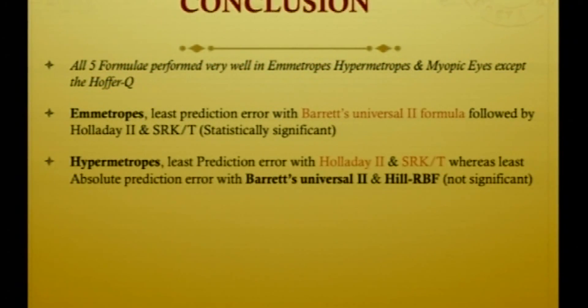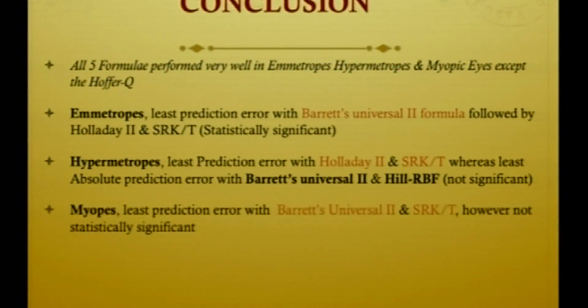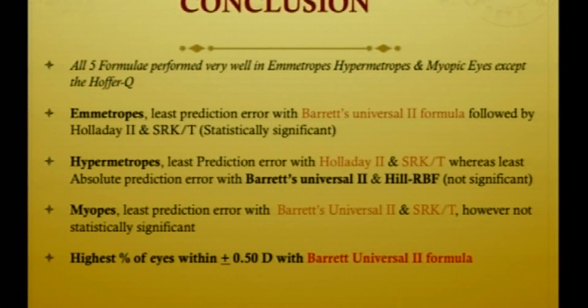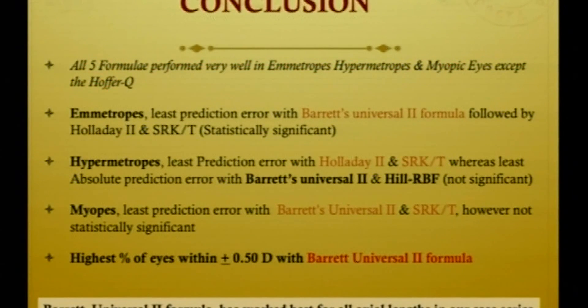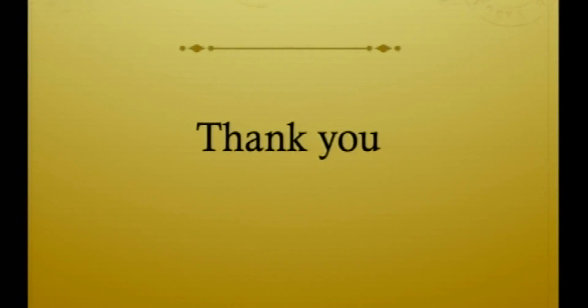To conclude, all five formulas performed very well in emetropes, hypermetropes, and myopes, except Hoffer Q. In emetropes, the least prediction error was observed with Barrett Universal II, followed by Holaday II and SRKT, which was statistically significant. In hypermetropes, the least prediction error was with Holaday II and SRKT, while the least absolute prediction error was with Barrett Universal II and Hill RBF, which was statistically not significant. In myopes, the least prediction error was with Barrett Universal II and SRKT. The Barrett Universal II formula worked best for all axial lengths in our case series.